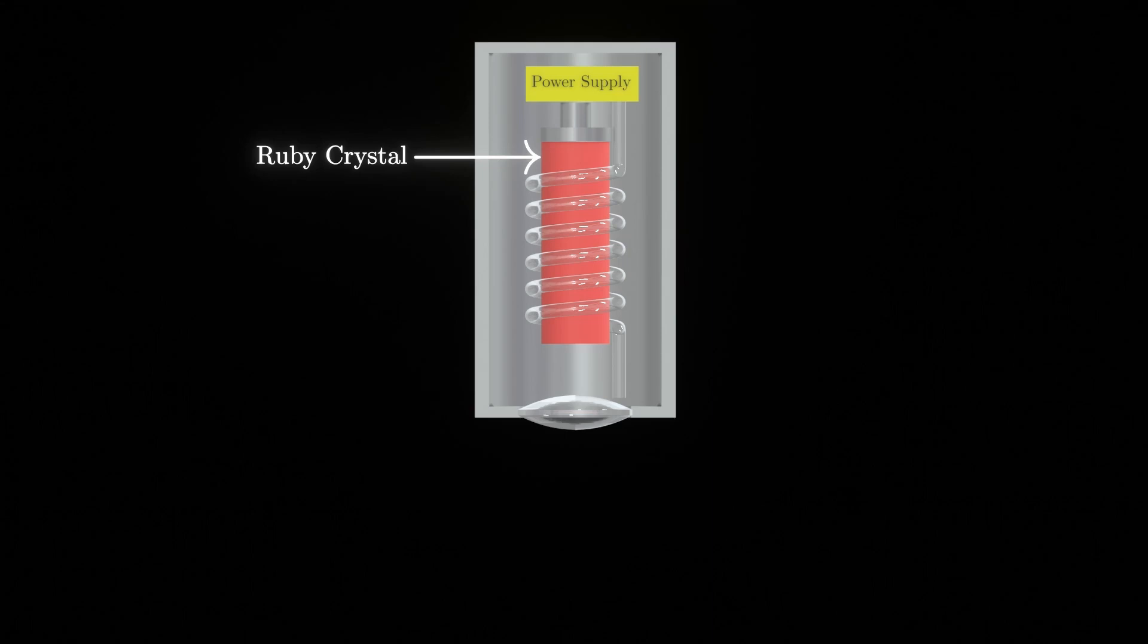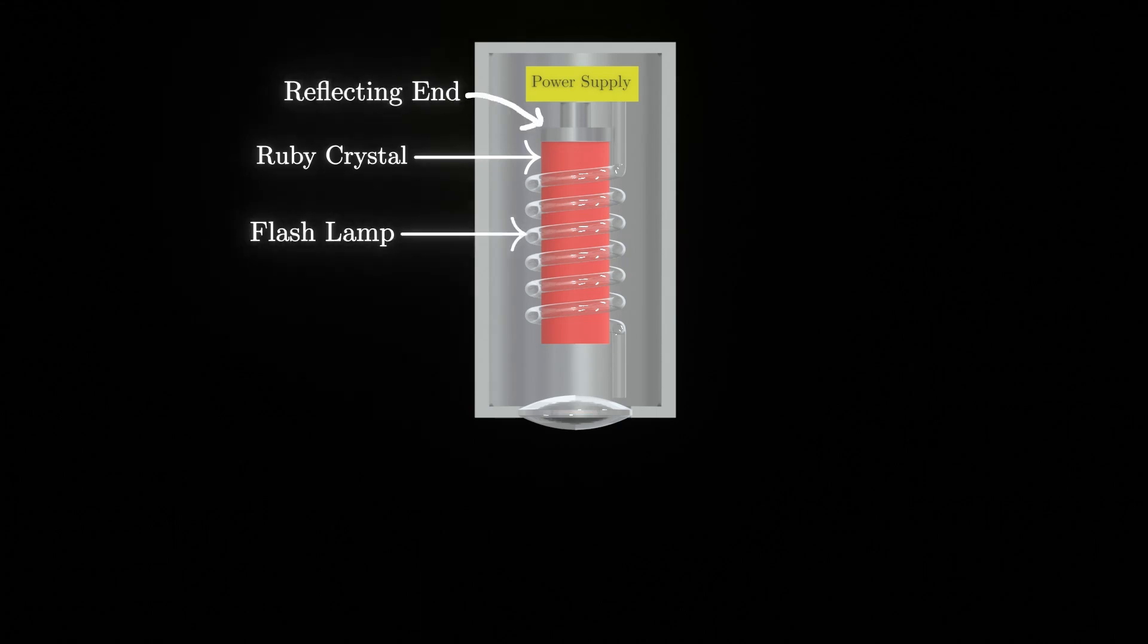A xenon-filled flash lamp is wound around the ruby crystal as shown. These xenon flash lamps are connected with a large capacitor with electric power of 250 to 1000 volts. In this video, you can see it as a power supply. A lens is placed to focus the laser beam energy into the workpiece.